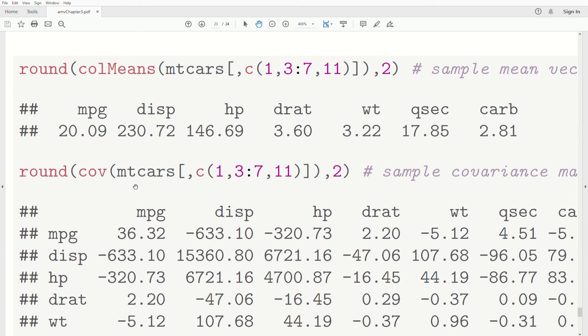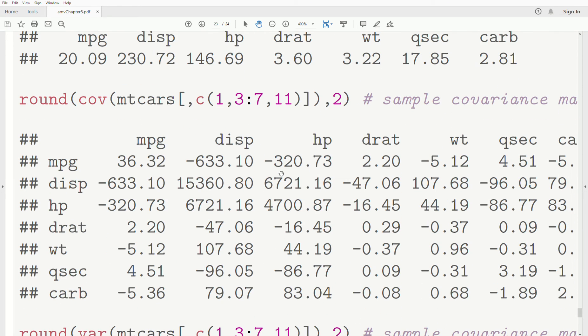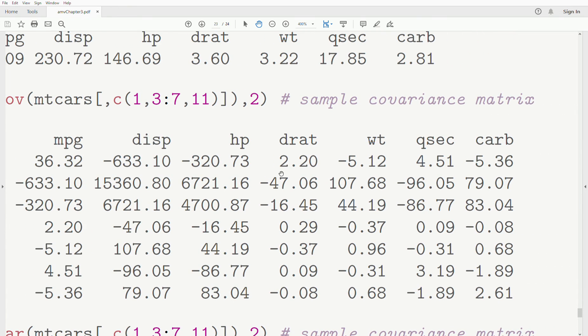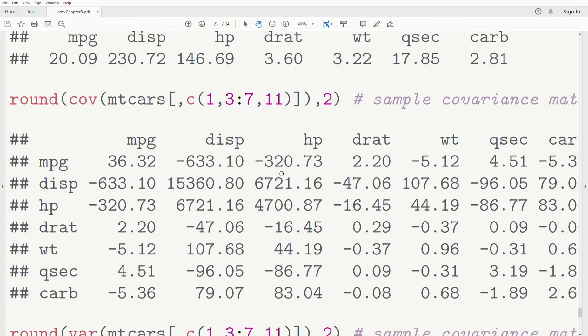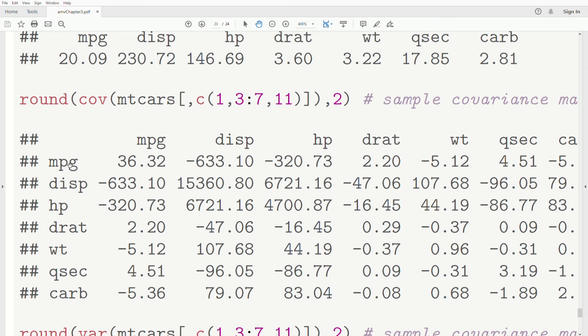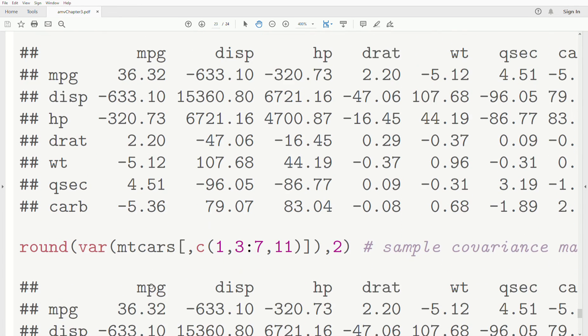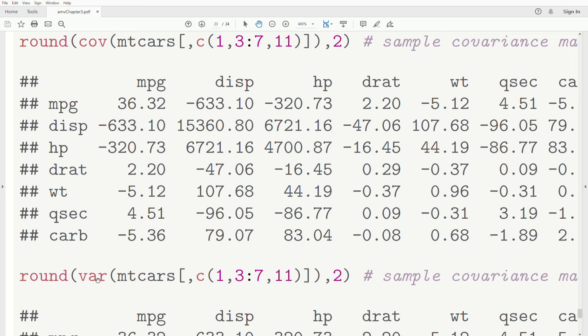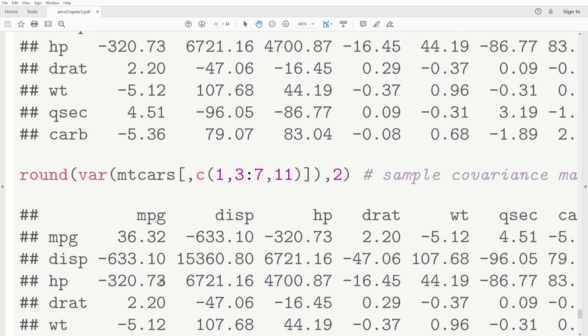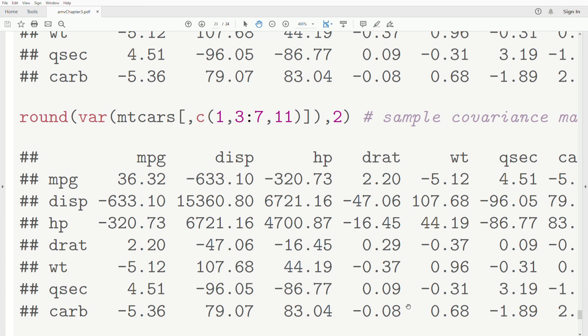Now to create a sample covariance matrix, you use the function COV, and then the data frame. I only grab the columns which are continuous-like. I round it to two decimals, so it fits on the screen. And that's it. The covariance between miles per gallon and miles per gallon is 36. Well, that's the variance of that variable. You could also use var. When you take the variance of a matrix or a vector, it creates a covariance matrix. And just to show you, these are exactly equivalent. They're the same.